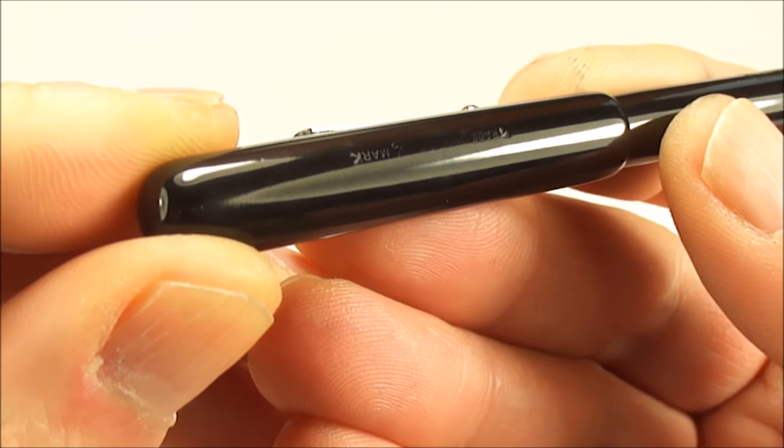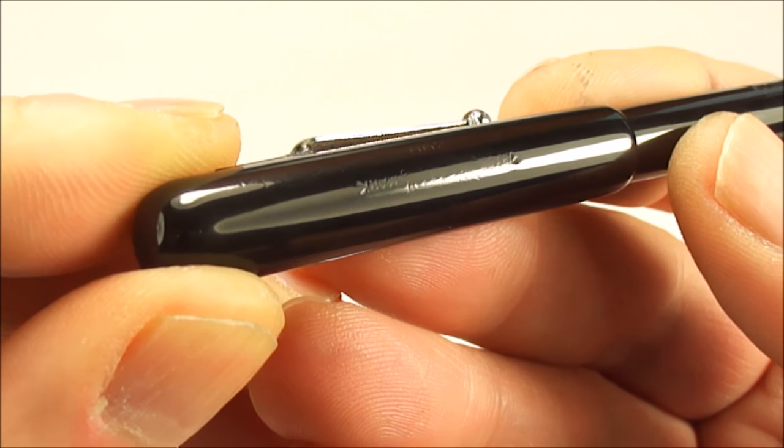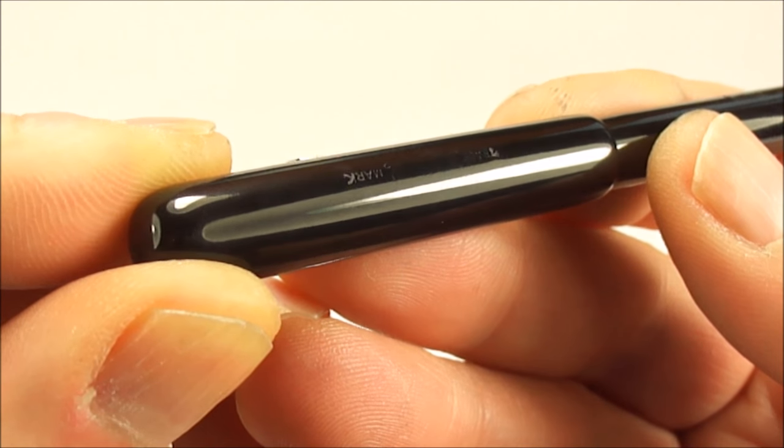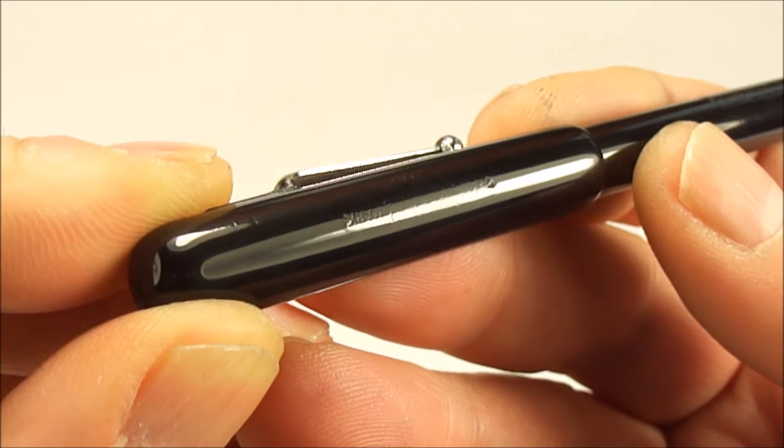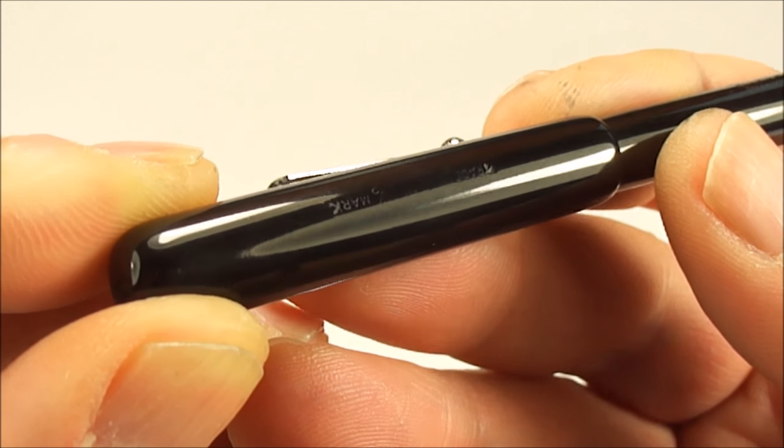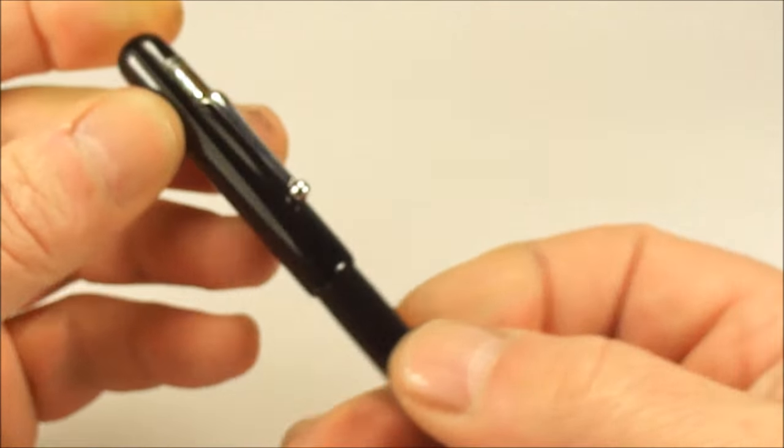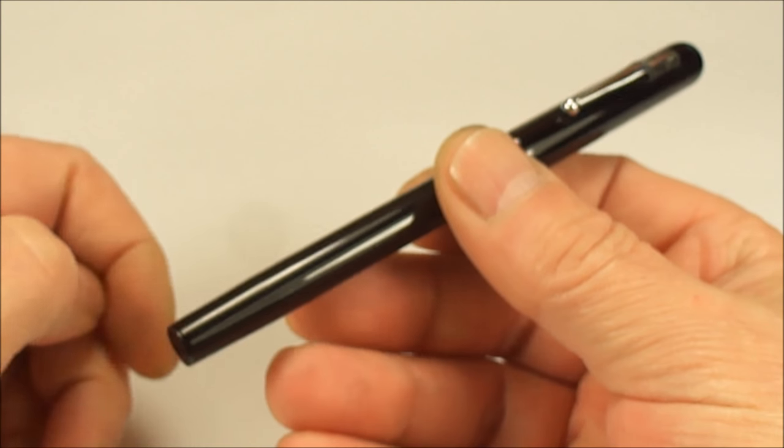Underneath that it has a number 200. I'm not sure if that is actually clear on the video. So that's how we can identify this pen as being the Swan Mabie Todd number 200.